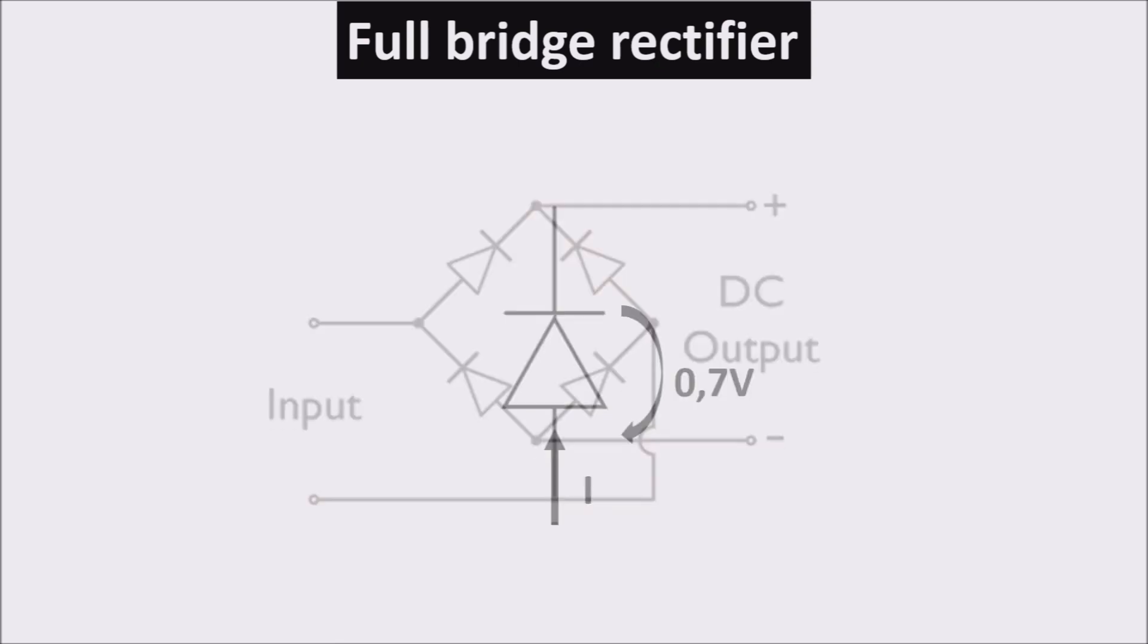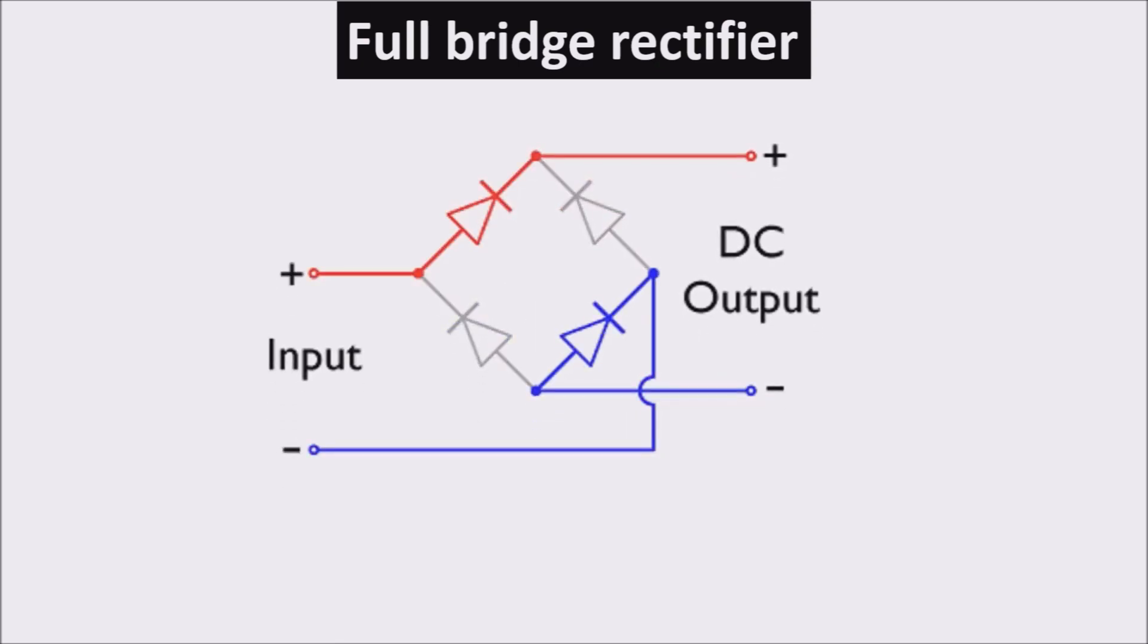We can use a configuration like this one, in which as you can see, even changing the polarity of the input current, the output is kept at a fixed polarity.